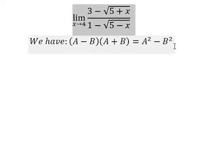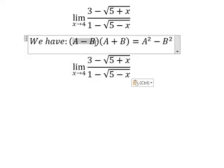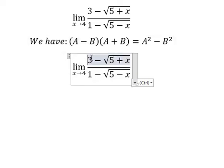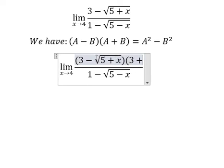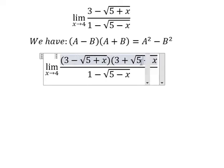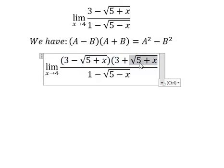If we look carefully at this, this is A, this is B. That's A minus B. We need to multiply by A plus B, which is 3 plus the square root of 5 plus x. I want to create the power 2 here so we can simplify the square root.